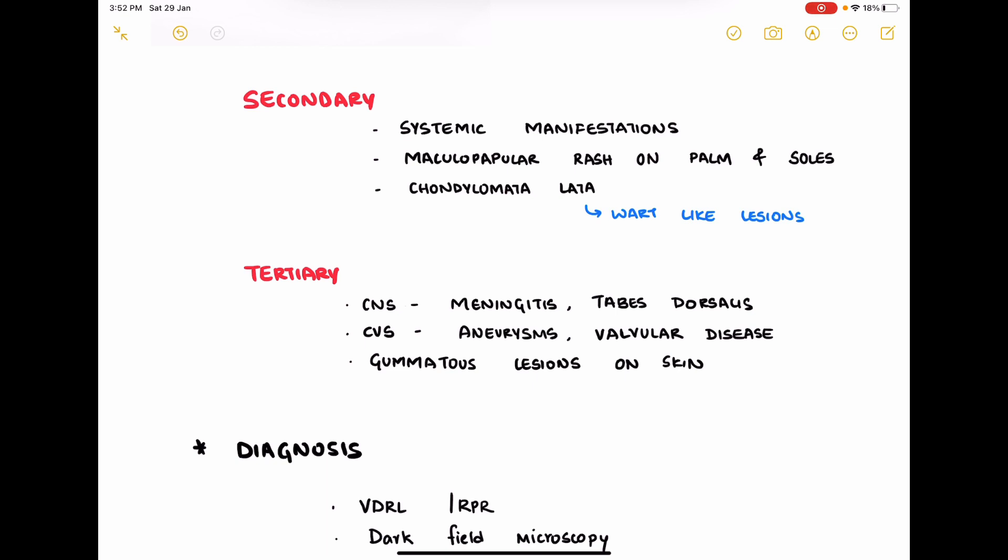Very few or a smaller percentage of patients progress into tertiary syphilis, where you have neurological involvement causing meningitis, tabes dorsalis, cardiovascular involvement such as aneurysms and valvular disease, and gummatous lesions on skin.